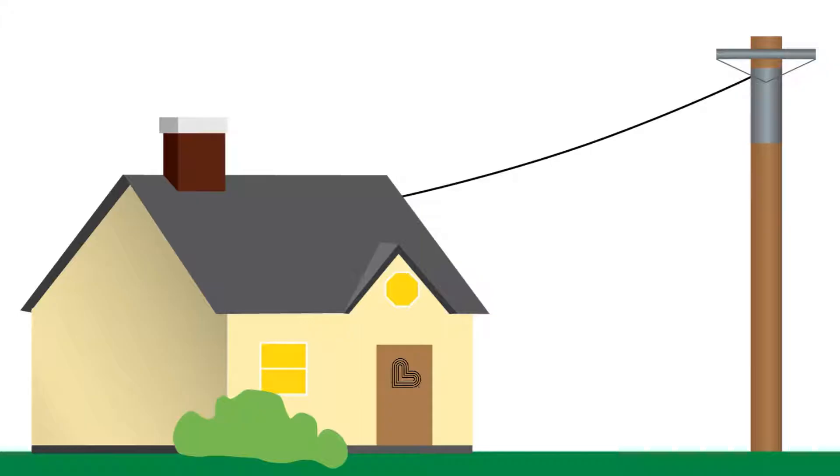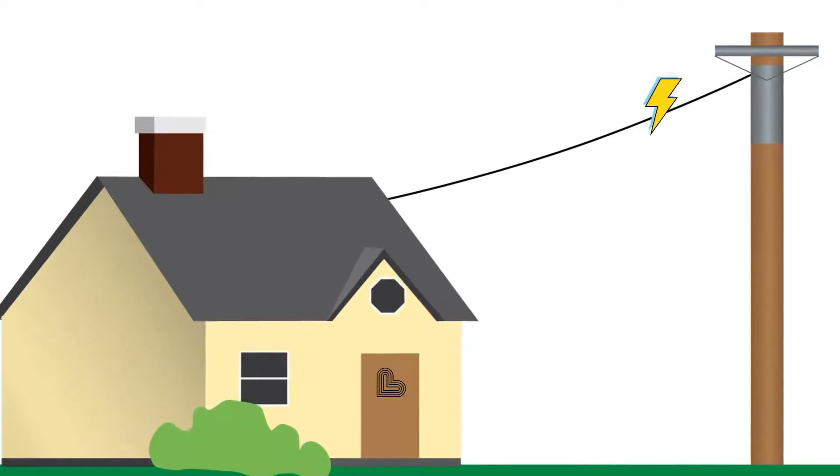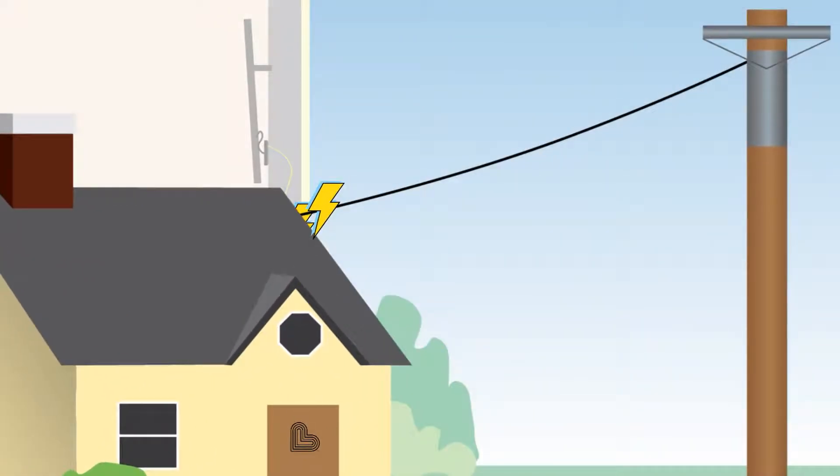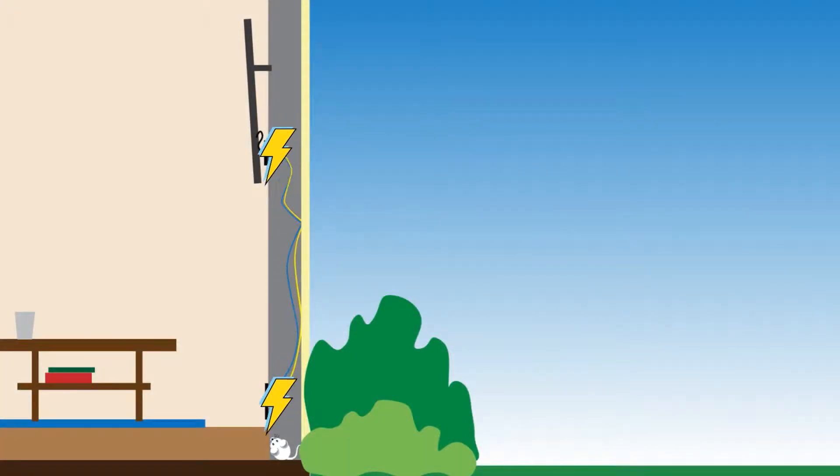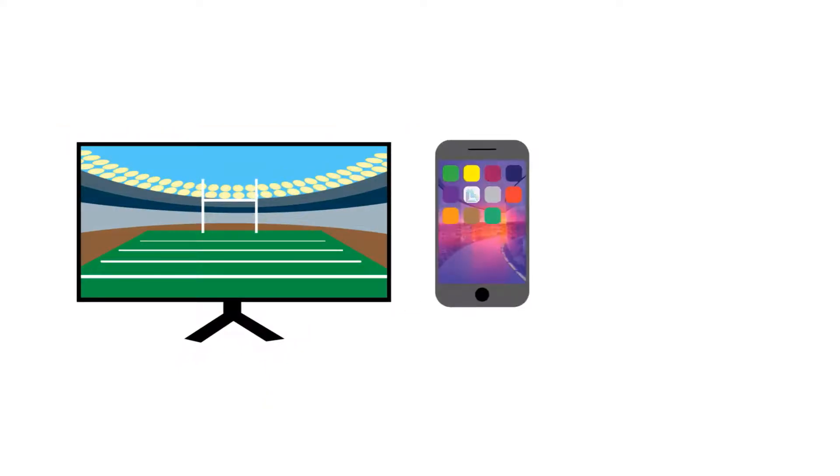Electricity has been in our homes for over 100 years, so it's something we don't usually think about until the power goes out. Electricity runs through the lines that attach to our homes and down through the wiring behind the walls. It runs our TVs, charges our phones, and makes a mean bag of popcorn if you have a microwave.